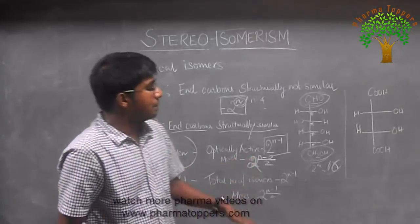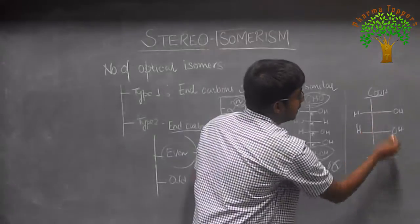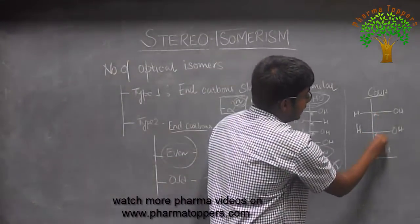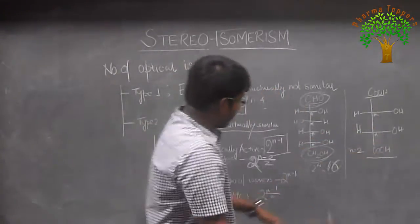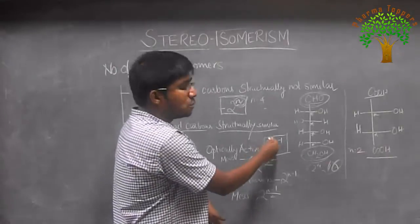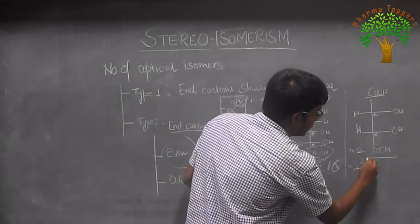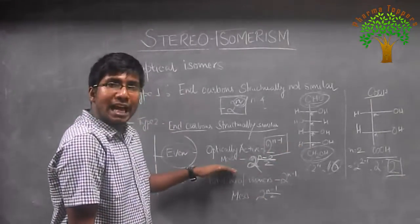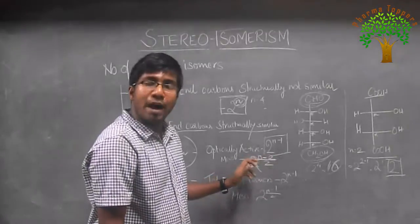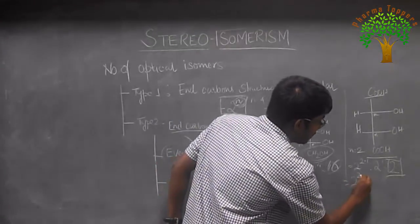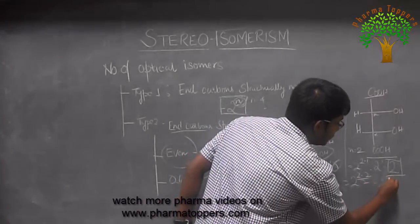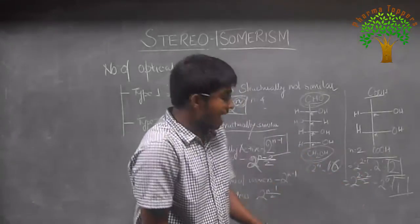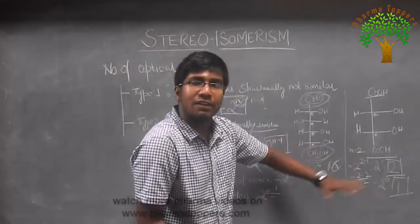We illustrate this with the classical example of tartaric acid. The end carbons of tartaric acid are structurally similar — both are carboxylic acid groups. It has two chiral centers, so n equals 2. Applying the formula: number of optically active isomers = 2 to the power (2 minus 1) = 2. Number of meso isomers = 2 to the power (2 minus 2) divided by 2 = 1. So tartaric acid has 2 optically active isomers and 1 optically inactive (meso) isomer, giving 3 total optical isomers.